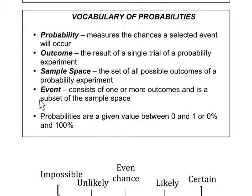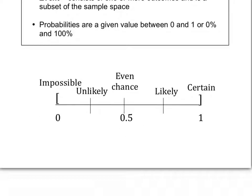Probabilities are given a value between 0 and 1, or 0 and 100%, and we've already talked about this when discussing standard normal distributions. Looking at the scale, if you have a 0 probability, that means it is impossible for this to happen — it'll never happen. Unlikely would be similar to 0.25, or 25%: it could happen, but more often than not, it won't.